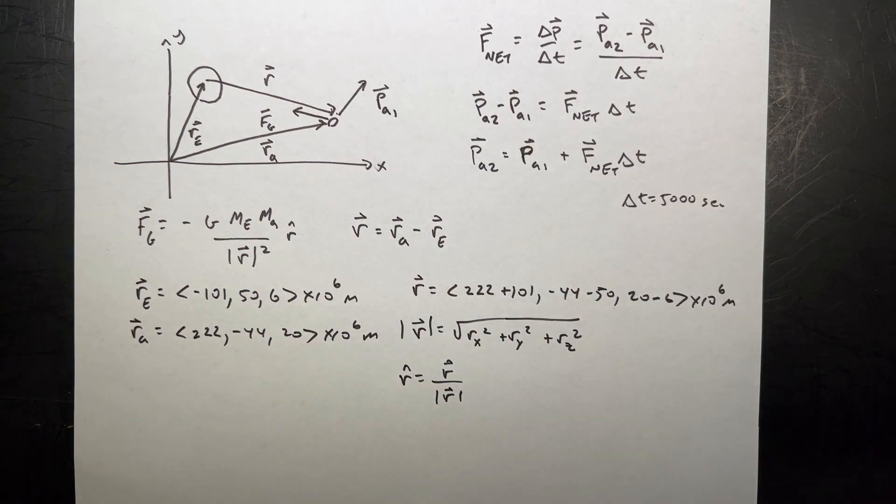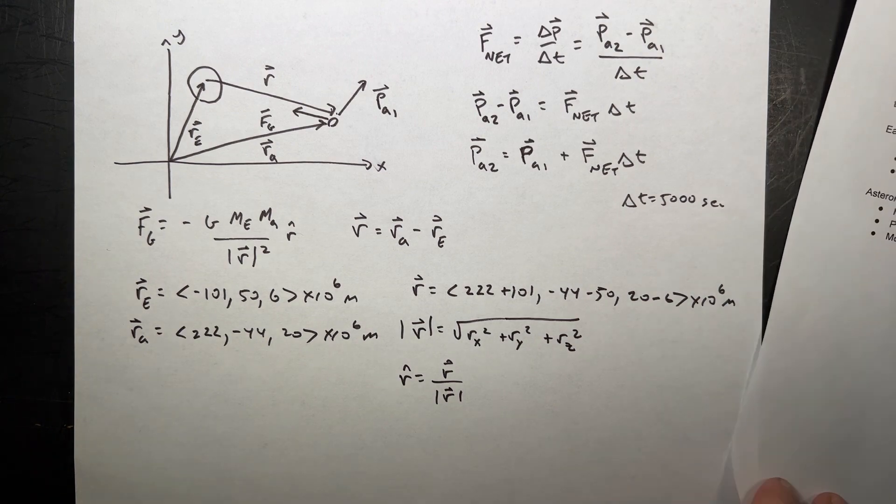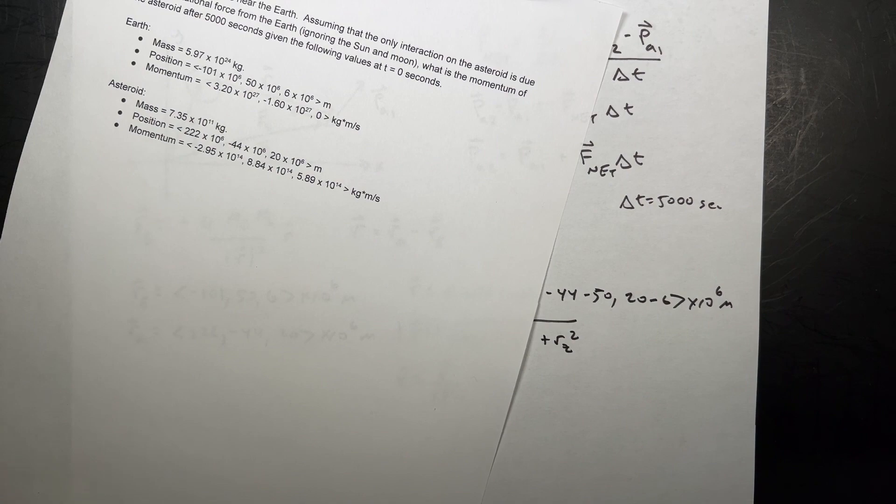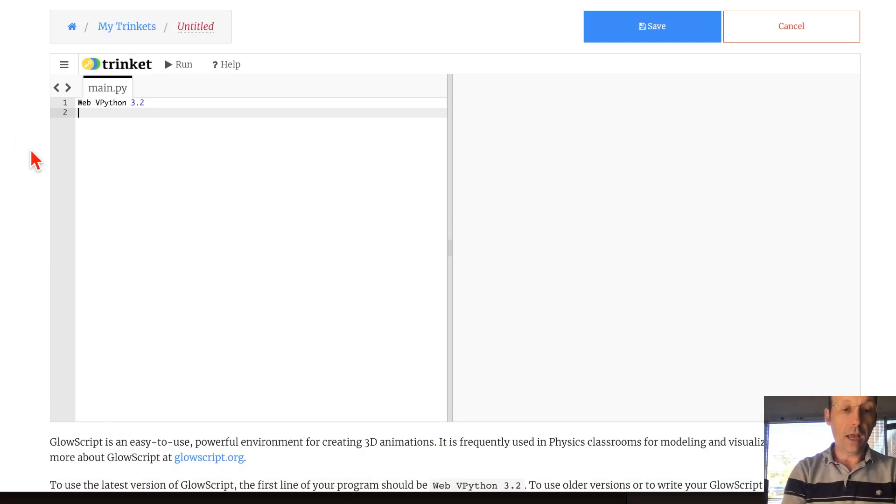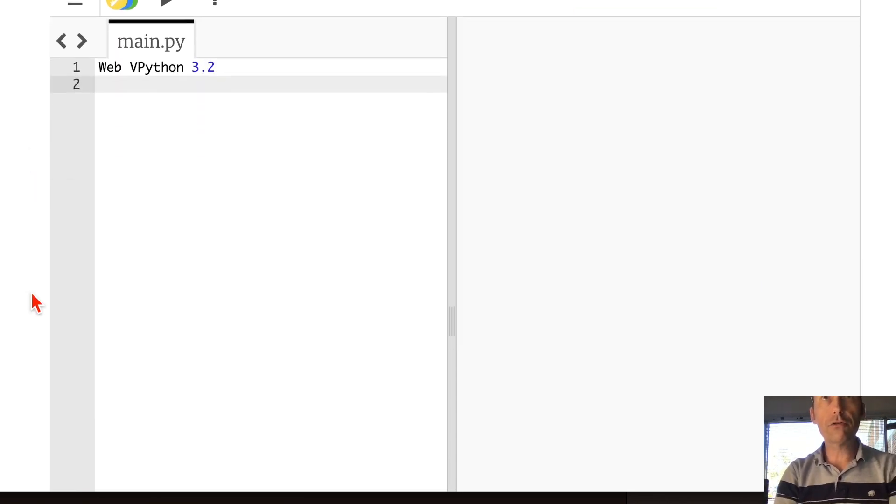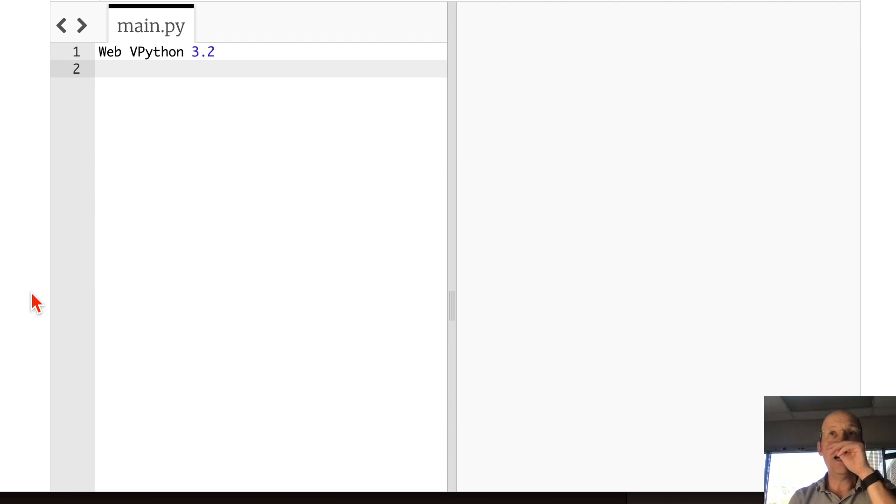And no one wants to do all that stuff. I don't want to do all that stuff. So this is where I think it would be useful to use Python. Python is a great calculator, especially for situations like this. So let's jump over to Python and do this calculation in Python. It's actually pretty easy. I'm pulling my notes over here so I have my numbers. I'm doing it 100% from scratch. I'm using Web VPython. It's GlowScript VPython.